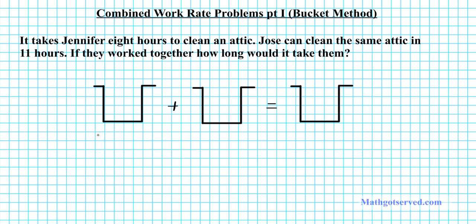So in the first bucket we'll have Jennifer's rate and then in the second bucket we'll have Jose's rate. That's on the left side of the equation. So if we combine Jennifer's rate and Jose's rate we'll have the combined rate.